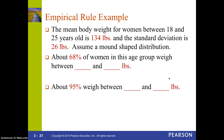Let's look at an example. If the mean body weight for women between 18 and 25 years old is 134 pounds and the standard deviation is 26 pounds, and we assume a mound-shaped distribution, the 68% corresponds to one standard deviation away from the mean. So I take 134 and subtract 26 pounds, and 134 and add 26 pounds. So 68% of women between the ages of 18 and 25 weigh between 108 and 168 pounds.